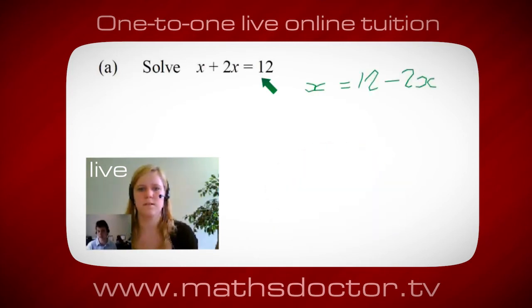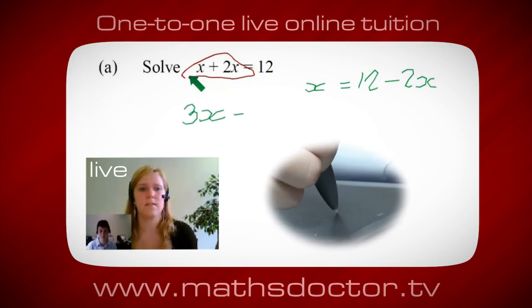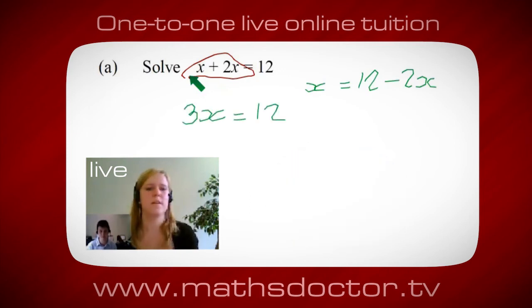Okay, so a lot of the time we want to get x by itself, but what we want to do first is get all of these x's together. So can you see anything we can do with this? Get all these together in one place. Oh, okay, it's 3x, isn't it? Yeah, absolutely. So 3x equals 12. Oh, and so x equals 4. Brilliant, spot on, well done.